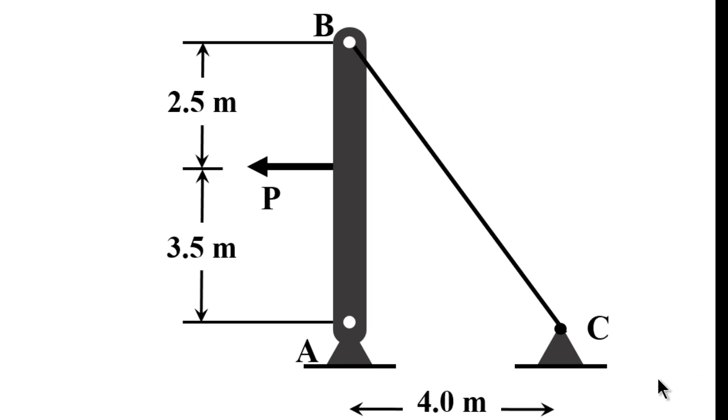As you can see there is this pole AB being held by cable from point B and pinned down to point C, and there is an unknown force P applied at a distance from the bottom which is equal to 3.5 meters.